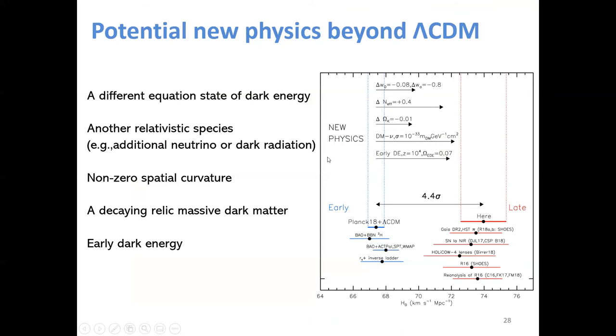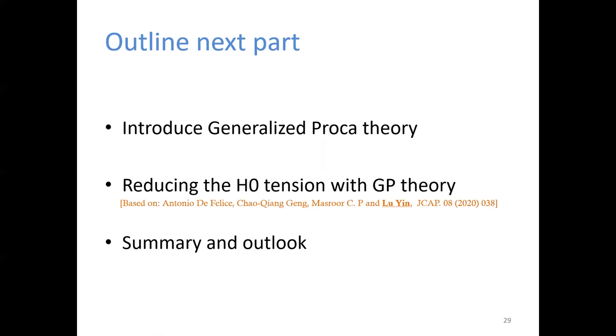If we want to release the H0 tension in a cosmological model, we have several five ways. One is to consider a different equation of state of dark energy. This can help to release the tension not too much. The second way is to consider another relativistic species, such as additional neutrino or additional dark radiation. This also has an effect to release this tension. And the next way is to consider a non-zero spatial curvature. This result will show us a closed universe. And a dynamic relativistic massive dark matter will also help to release this problem. And the last way is early dark energy. It can effectively release the H0 tension. In the next, we will introduce the generalized Proca theory to reduce the H0 tension with this model.